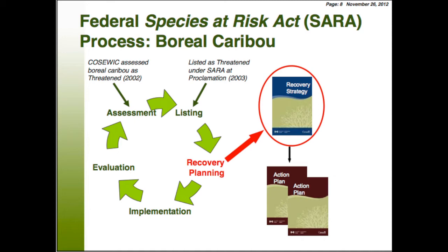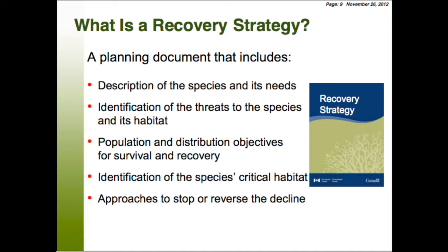COSEWIC continuously and periodically looks at all the species they recommend to be listed, and we also review our recovery strategies every five years to update them and see how species are doing. The recovery strategy has several aspects: a description of the species and its needs, identification of threats to the species and its habitat, population and distribution objectives showing how we know when a species is recovered, identification of critical habitat to the extent possible, and approaches to stop or reverse the species' decline.